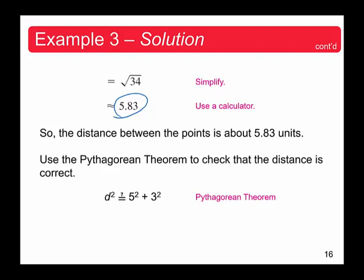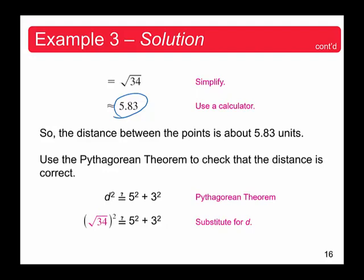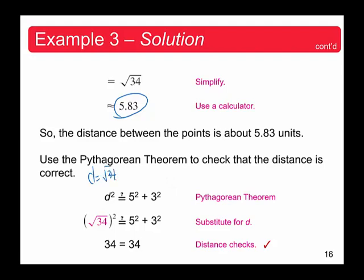We can verify using the Pythagorean theorem by plugging in d = √34, and we confirm 34 = 34. This verifies the distance between those two points is √34.